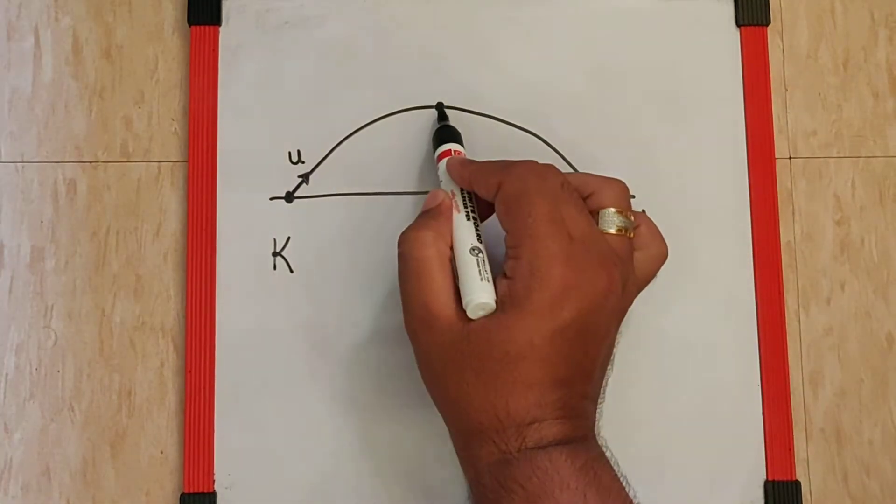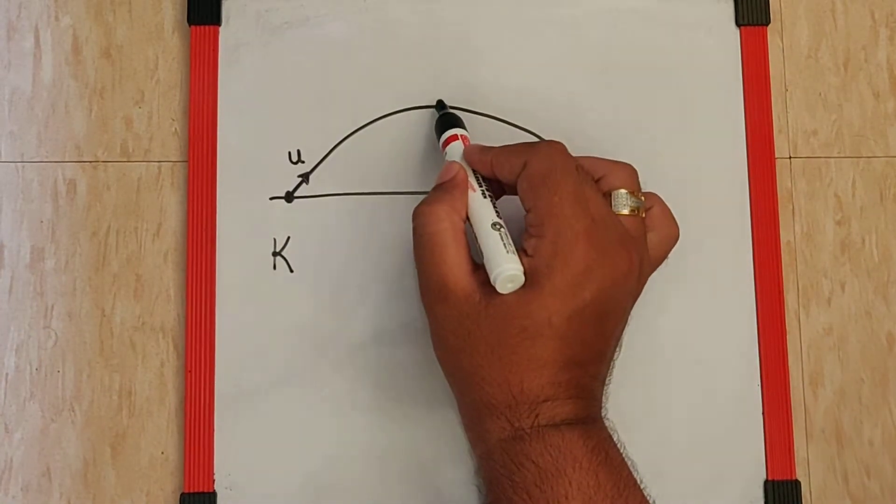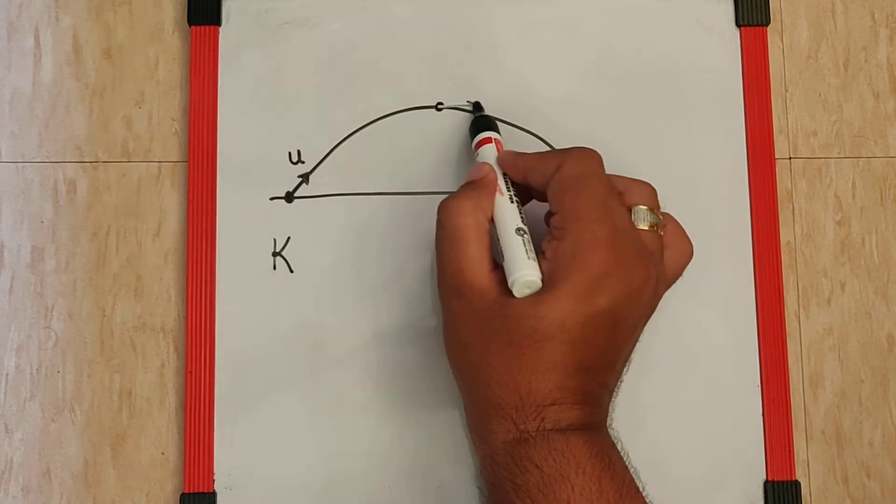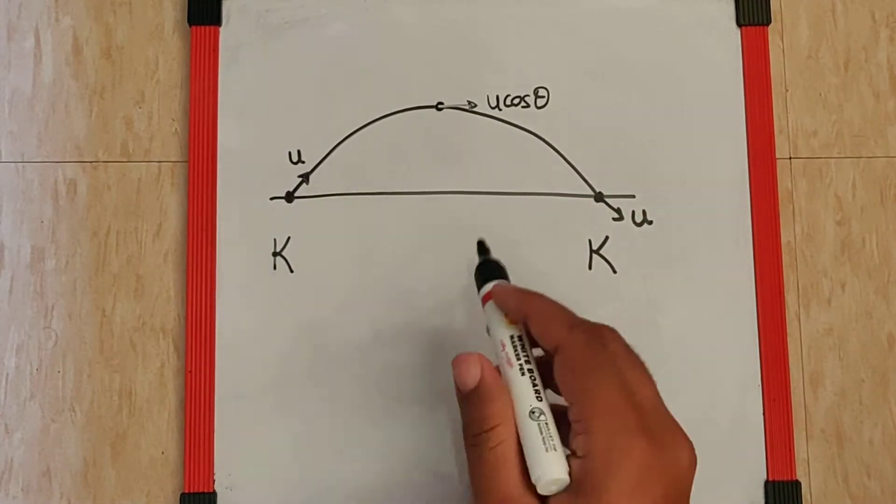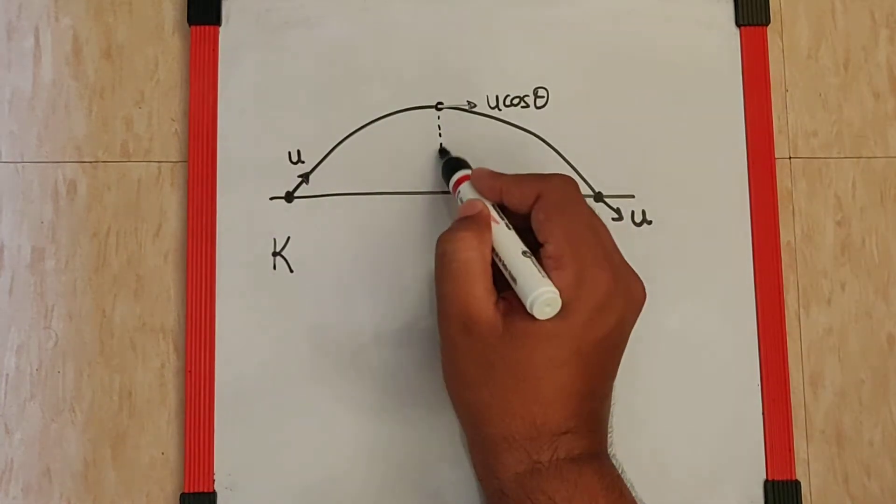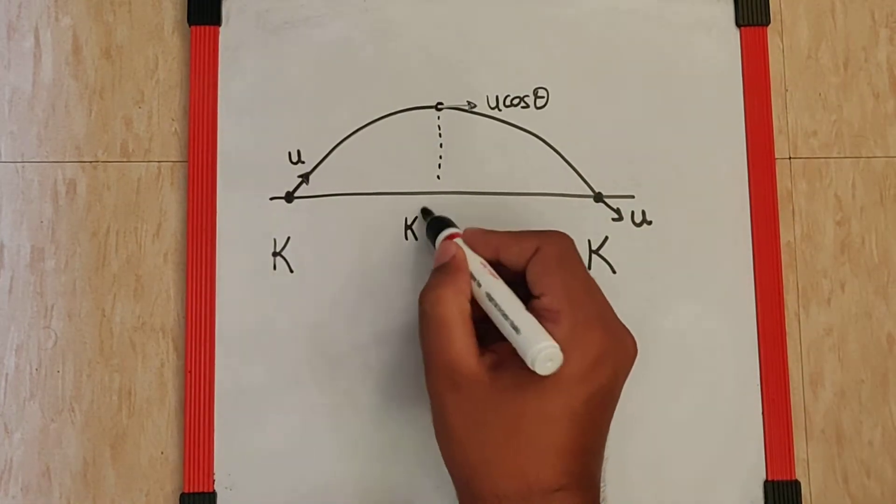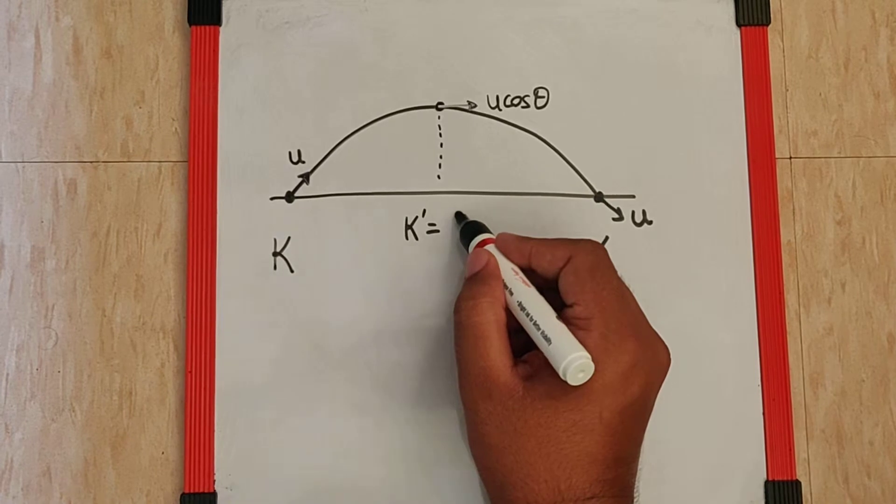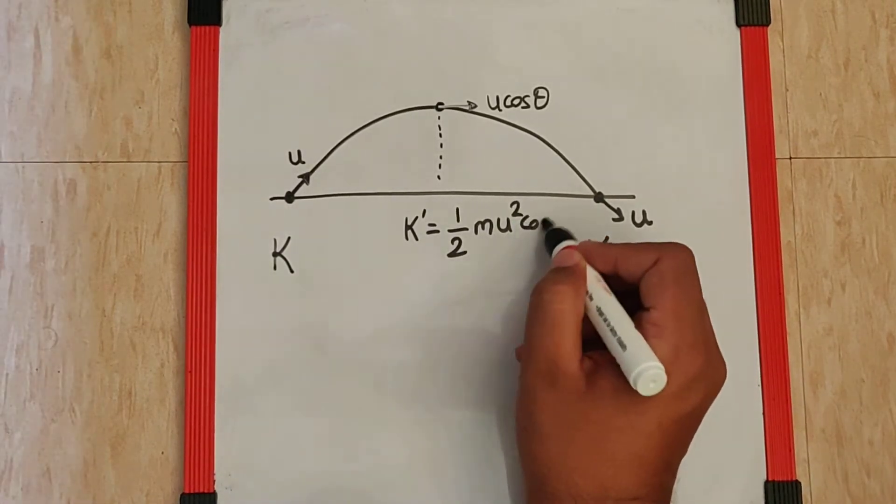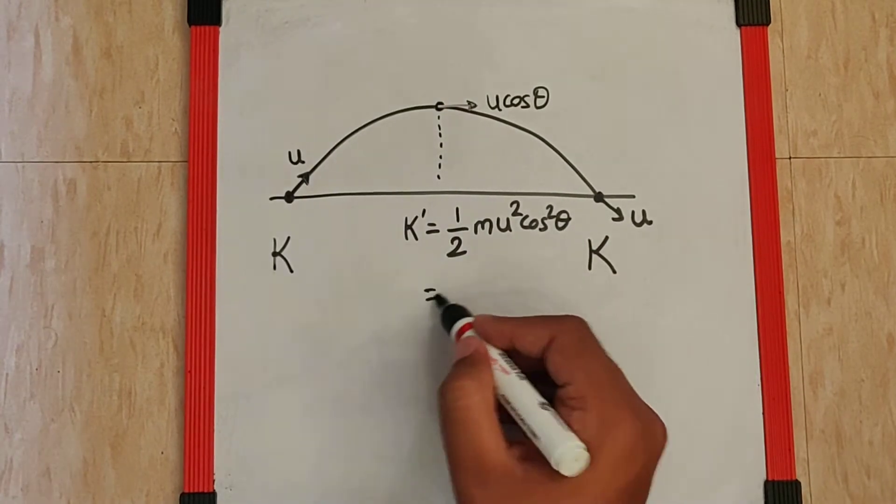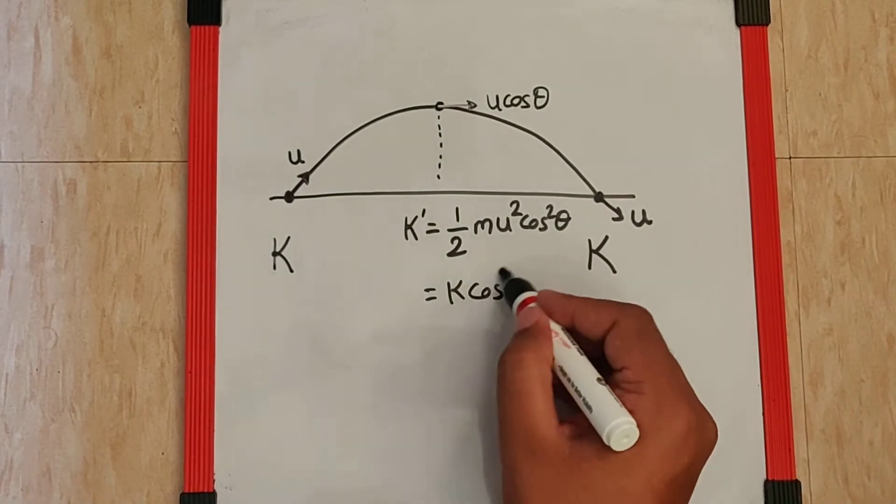topmost point, the velocity is minimum because only the horizontal component, which is u cos θ, remains in the equation. This means the kinetic energy becomes (1/2)mu²cos²θ, which is equivalent to K cos²θ.